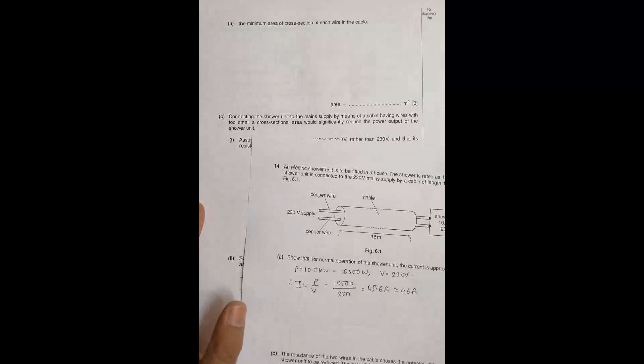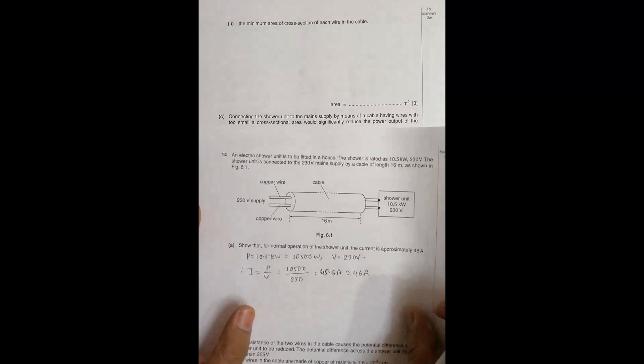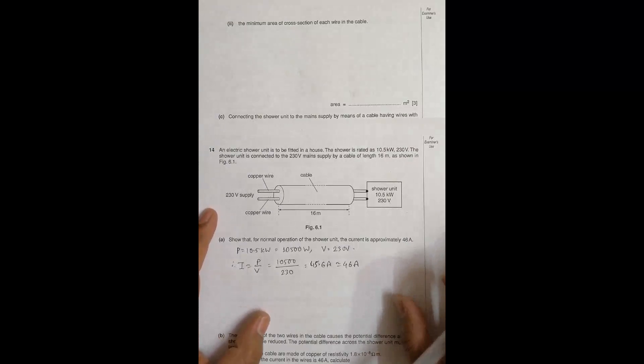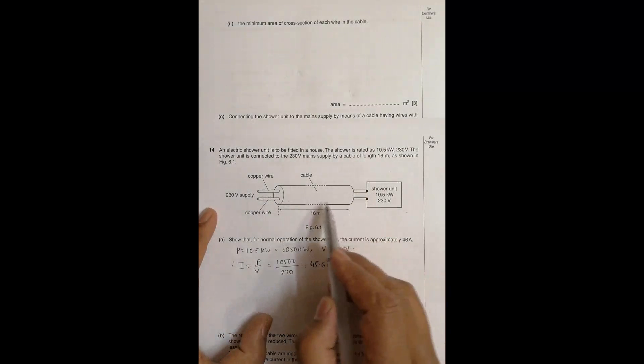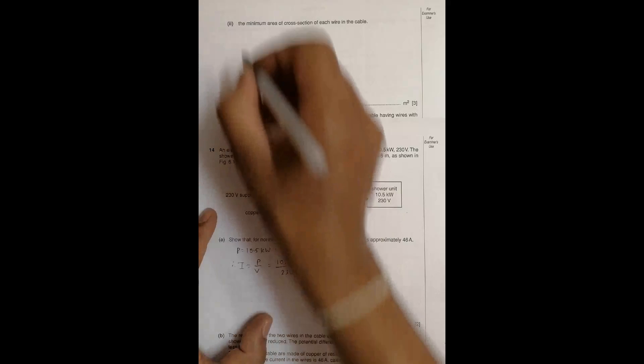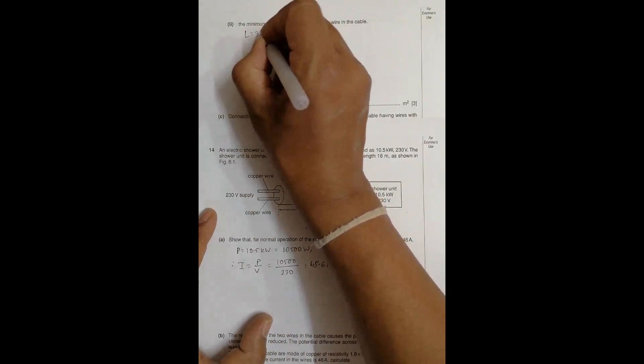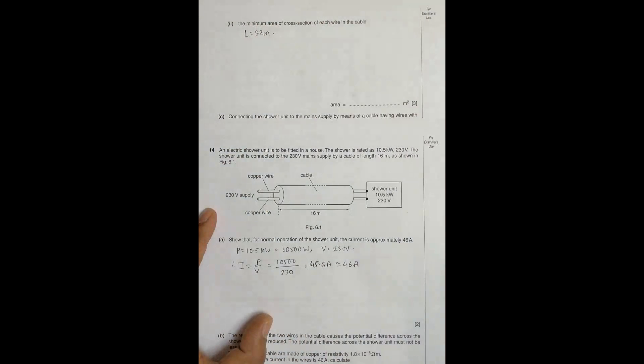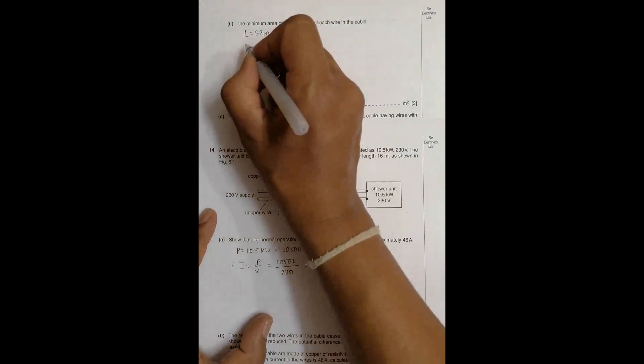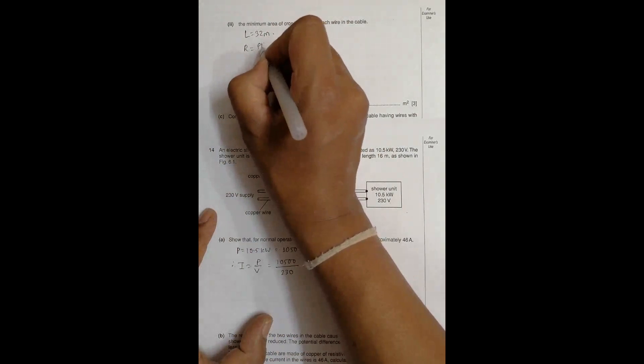Now the minimum area of the cross section of each wire in the cable. The total length of the wire through which the current flows is 32 meters, and we have to find the area.